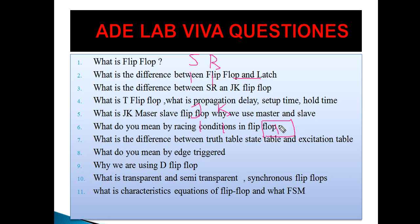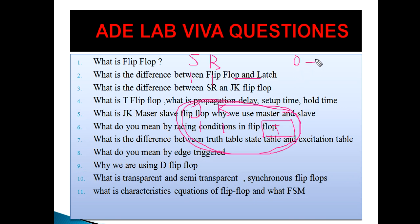Using this toggling property of JK, one more flip-flop was developed called the T flip-flop. There is no other difference between JK and SR. The T flip-flop uses only this toggle property: when T input is 0, output is 0; when T input is 1, output toggles. That is the T flip-flop.